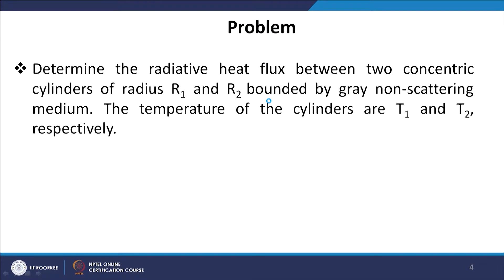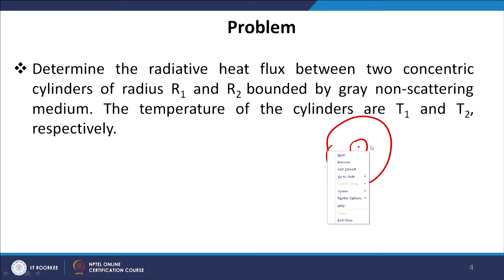I will give an outline of how this method can be applied to any problem in complex geometry. Let us solve one problem: we have a cylindrical medium — 2 concentric cylinders of radius r₁ and r₂ maintained at isothermal temperatures T₁ and T₂. The medium inside is gray and non-scattering. We have to find out the heat flux between the 2 cylinders.